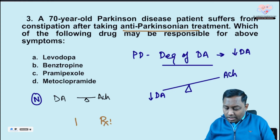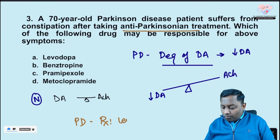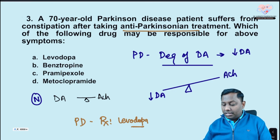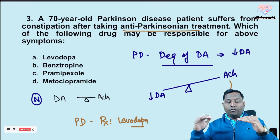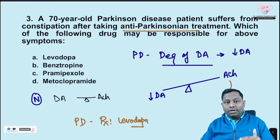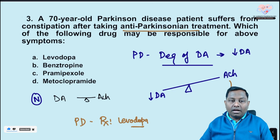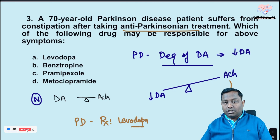To treat Parkinson's, you can either increase dopamine or decrease acetylcholine. The most preferred treatment is levodopa, a dopaminergic drug. Levodopa has side effects including tachycardia and cardiac-related issues. Alternatively, centrally acting anticholinergic drugs like benztropine or benzexol can be used to bring acetylcholine down and restore balance.